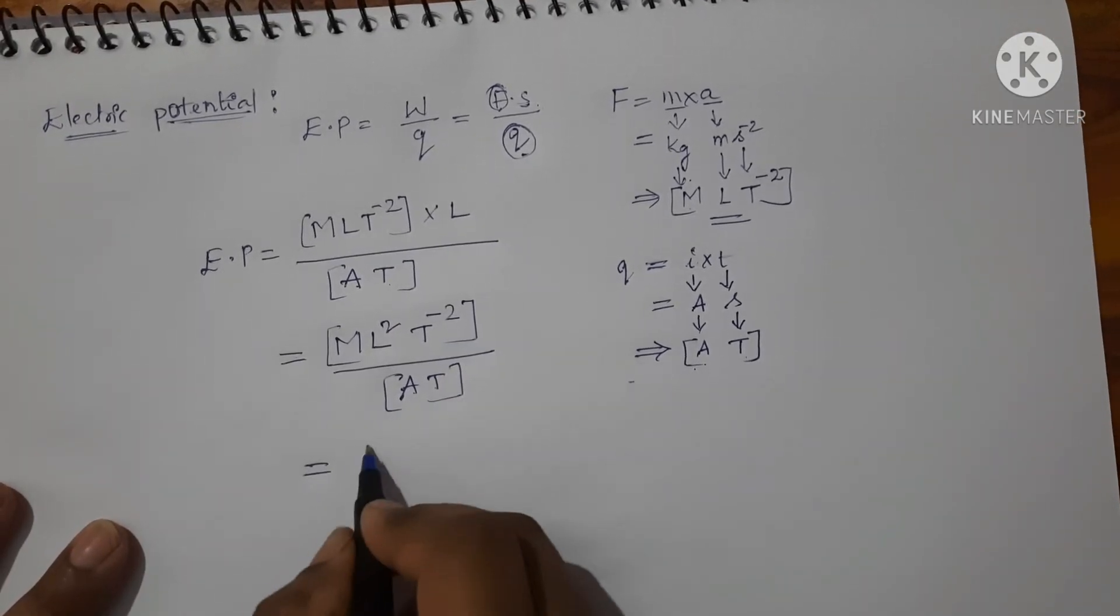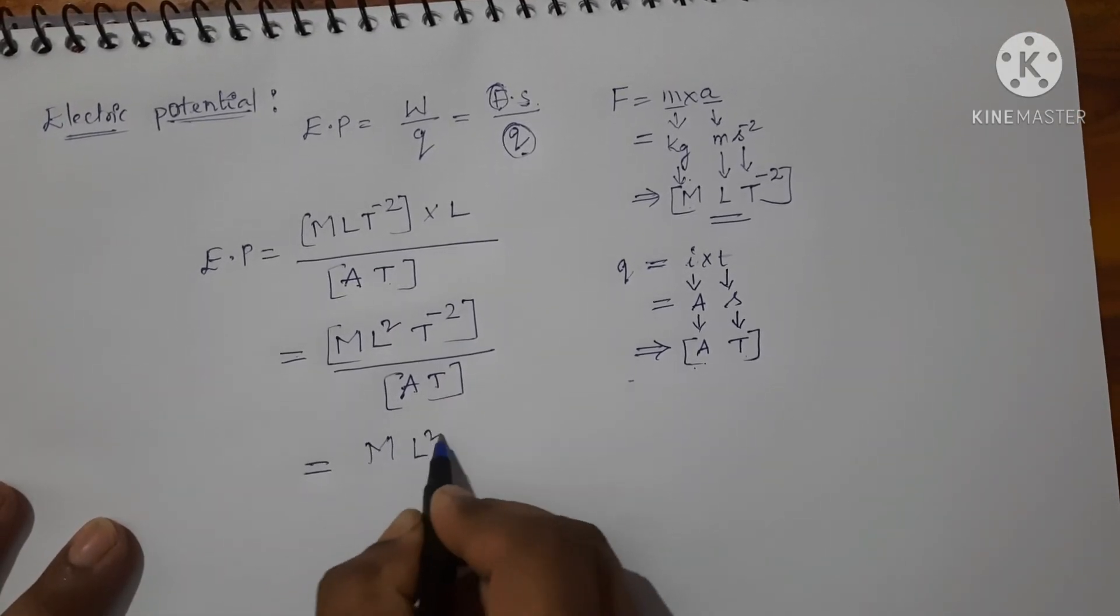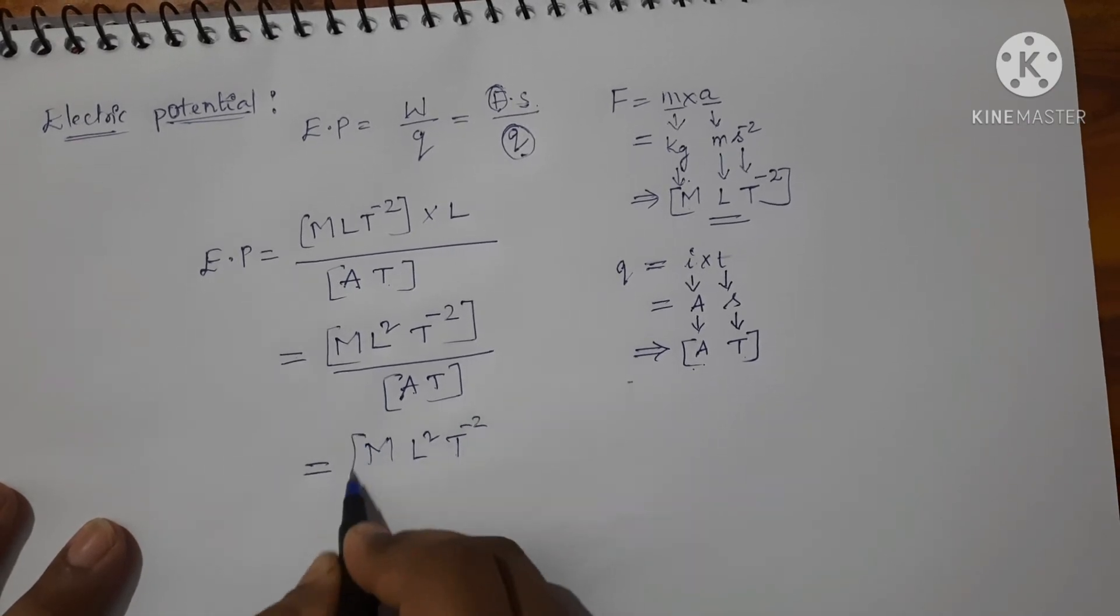Write this AT on the numerator, so MLT power minus 2 into...